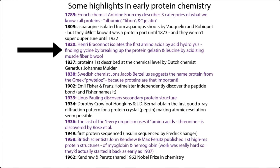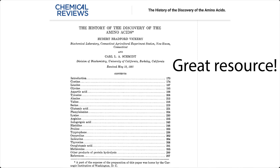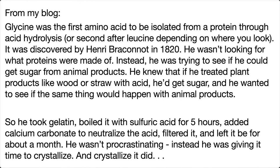A little bit of history: glycine was the first amino acid to be isolated from a protein through acid hydrolysis — basically using acid to break up a protein and then analyzing the parts. It was discovered by Henri Braconnot in 1820. It's a pretty interesting story because he wasn't actually looking to find out what proteins were made of. He knew that if you treated plant products like wood or straw with acid you'd make sugar, and he wondered: what about animal products? So he took gelatin, boiled it with sulfuric acid for five hours, added calcium carbonate to neutralize the acid, filtered it, and left it for a month to see if it would crystallize. And it did crystallize — he got these crystals growing on the walls of his glass.